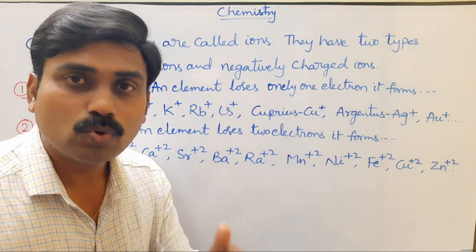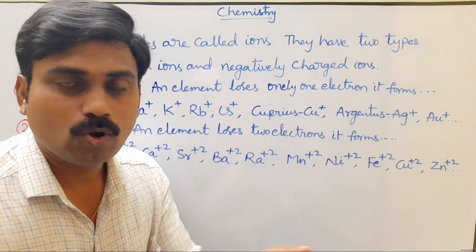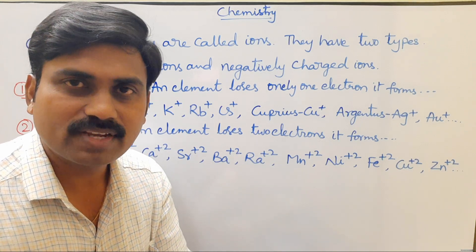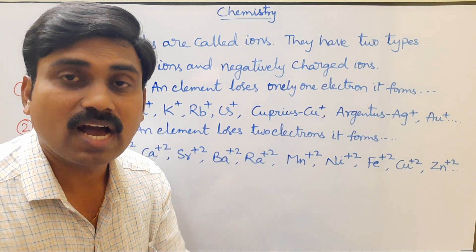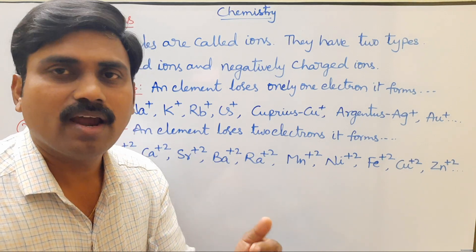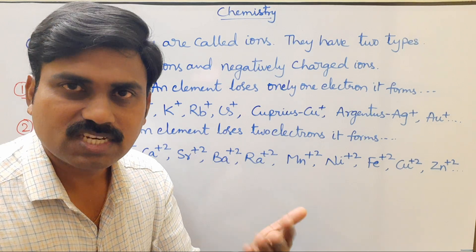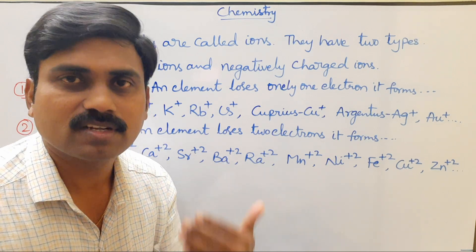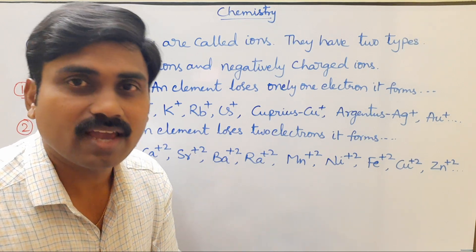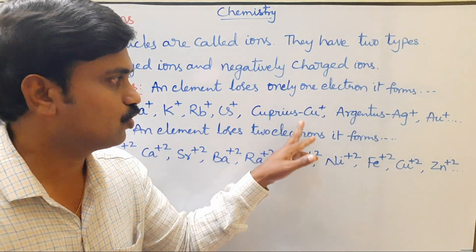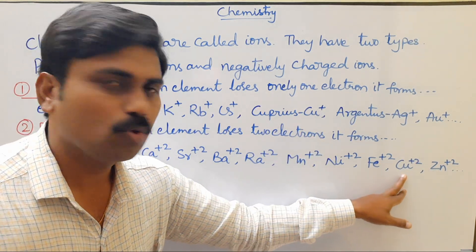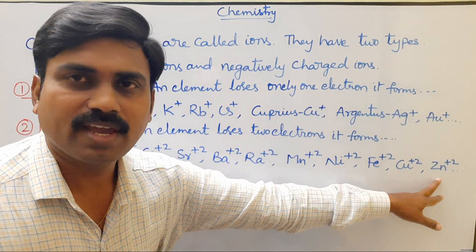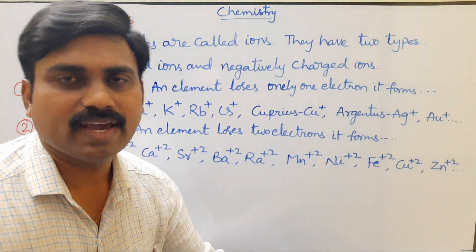When an element has two possible charges, the lower oxidation state is indicated by the suffix -ous and the higher oxidation state is indicated by the suffix -ic. So Cu⁺ is cuprous ion and Cu²⁺ is cupric ion. Another example: zinc ion Zn²⁺.